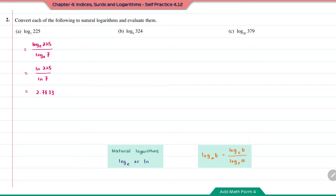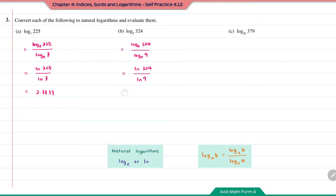Question B: log base 9 of 3 to the power of 4. This will be log base E of 3 to the power of 4 over log base E of 9, or LN of 3 to the power of 4 over LN 9. Using a calculator, the answer is 2.6309.